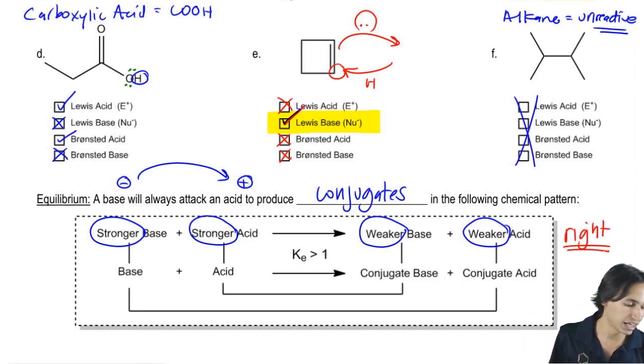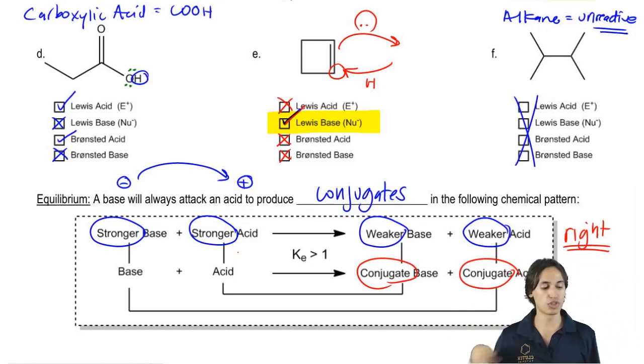And then what we're going to do is everything that's on the right side of the arrow, everything that's after reaction, we're going to call that a conjugate. The conjugate means that's what happened after it reacted. So everything beforehand, we're just going to call it the regular base and the regular acid.